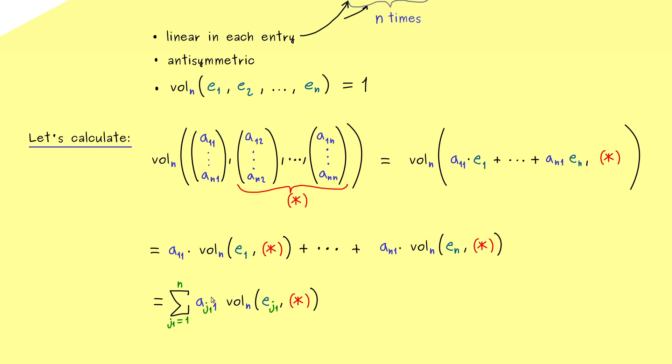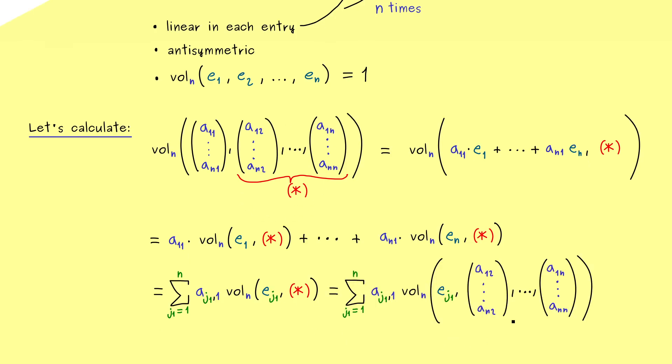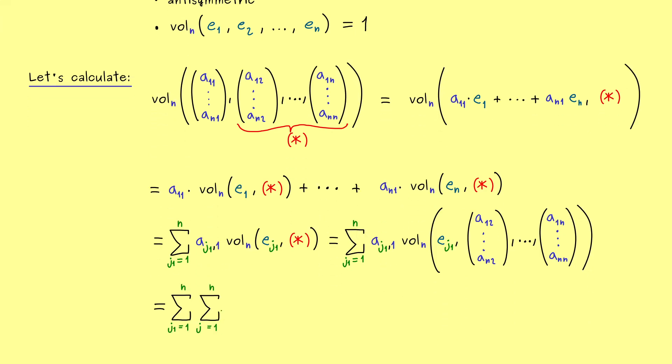Indeed, at this point some people introduce a comma here to distinguish both indices. Therefore, from now on we will also do that now. Okay, and now in the next step we can re-substitute our star here. After doing that we see we can do exactly the same thing again, but now for the second entry here. Hence if we do that we get a second sum here. And then of course a good name for the index would be j2. Moreover we get a_j2,2 as the vector in front and in the volume form we find e_j2 in the second entry. And of course in the same way as before we don't change the other entries in the volume form.